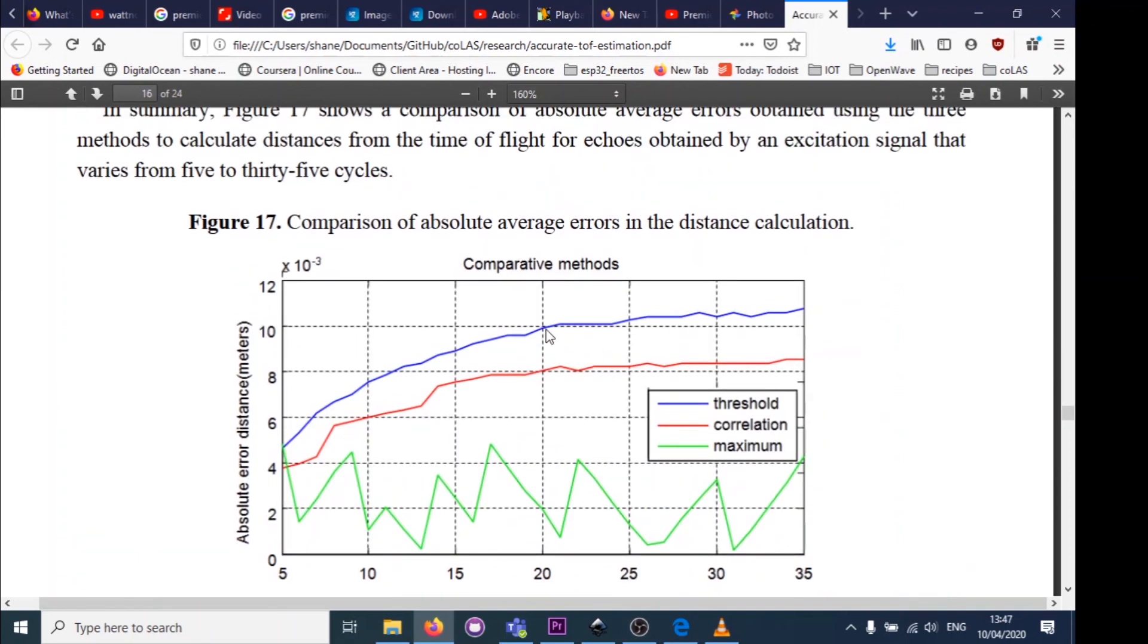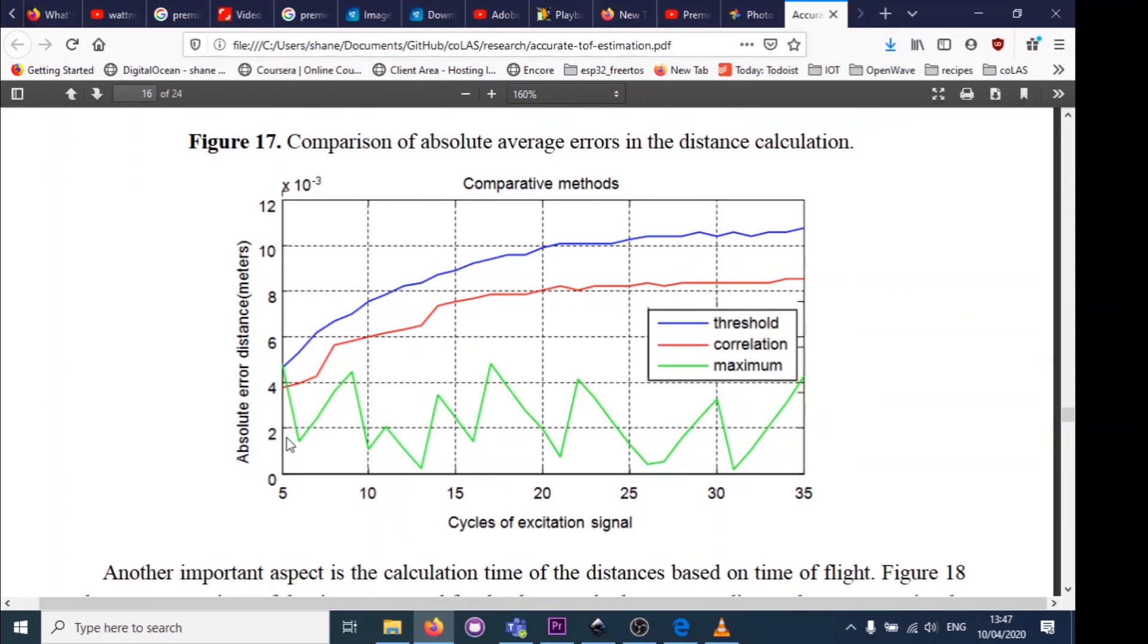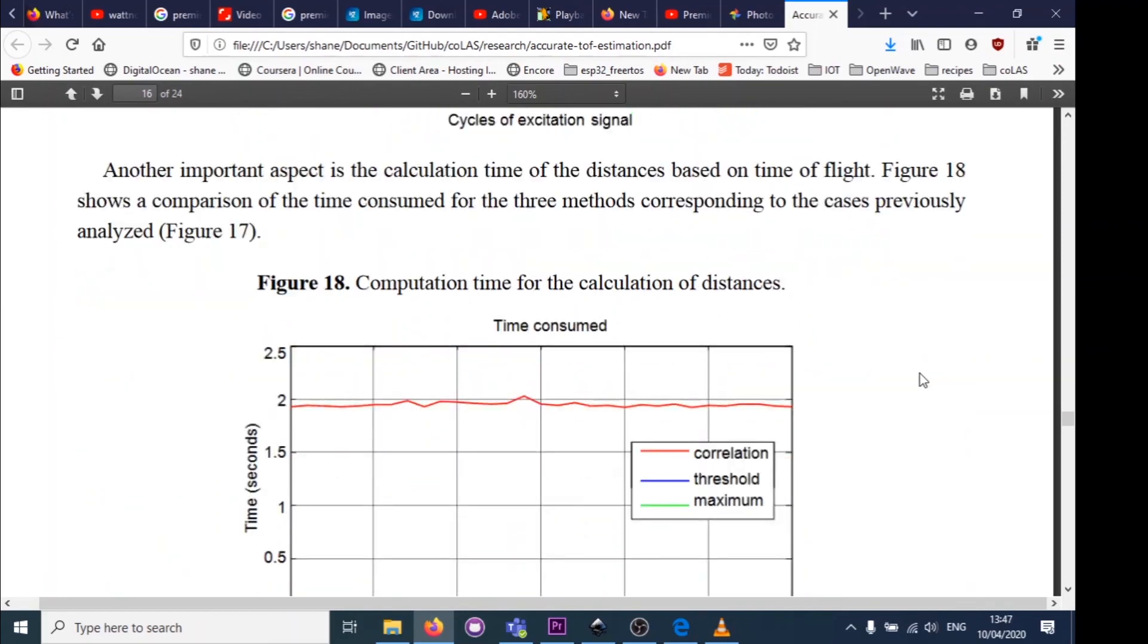They've got results here in millimeters. The blue line is the error using the threshold method—it starts at around five mil and goes up to around 10 mil. For the maximum envelope detection method, we're hovering around between two and four millimeters, which is pretty good.